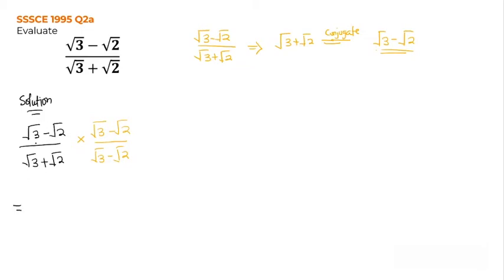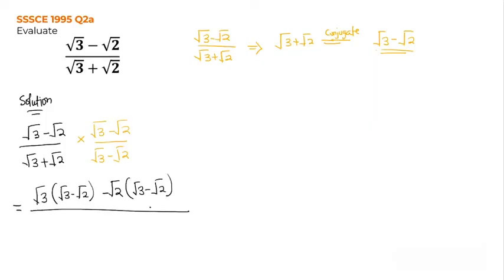So this now equals: I take root 3 and multiply it by the bracket root 3 minus root 2, then take the second component, which is minus root 2, and multiply it by root 3 minus root 2 — that's how you expand brackets. For the denominator, root 3 multiplies everything in the bracket root 3 minus root 2, then plus root 2 multiplied by root 3 minus root 2.